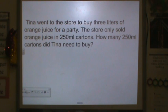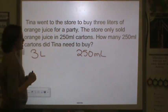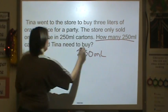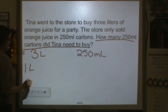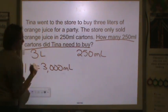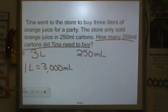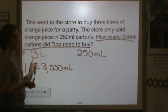Tina went to the store to buy three liters of orange juice for a party. The store only sold orange juice in 250 milliliter cartons. How many 250 milliliter cartons did Tina need to buy? We know that one liter is equal to 3,000 milliliters, because milli means a thousand. So we need how many groups of 250 will get me to three liters.